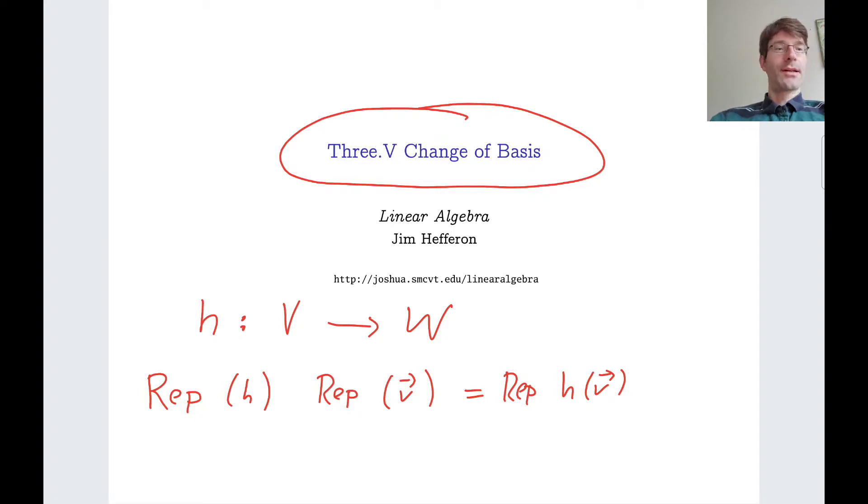Now I've suppressed the bases that are at play. So we represent V with respect to a basis of the input space or domain space V and H of V with respect to the co-domain space D. And the representation of the linear map is also with respect to these bases B and D respectively. And the point is that rather than application of H to V, we now have matrix vector multiplication.